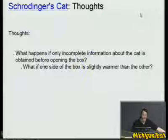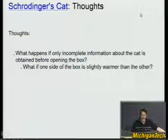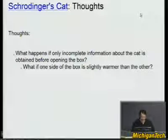Here's where my real understanding drops off the edge. I don't know what happens if you only gain some incomplete information — for example, if you find out that one side of the box is slightly warmer than the other. Does that mean the cat was sleeping on that side recently? You're given incomplete information about what's in the box. What happens then? I don't know. That's my understanding of Schrödinger's Cat, and partly quantum mechanics stops at that point.